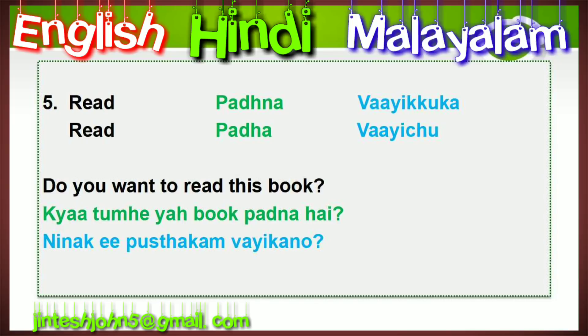The next verb is 'read.' In Hindi: padna / paya. In Malayalam: vaai ga. Second form 'read' (past): padya / vaai. Question: 'Do you want to read this book?' In Hindi: kya tumhe yeh book padna hai? In Malayalam: ninak ee pustagam vaai keno? Note: pustag in Hindi and pustagam in Malayalam both mean 'book.'